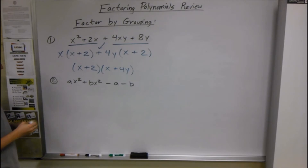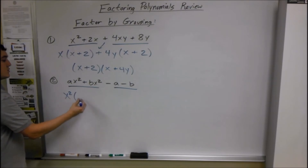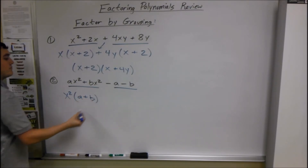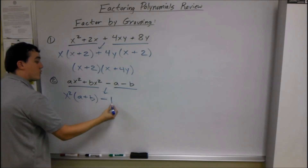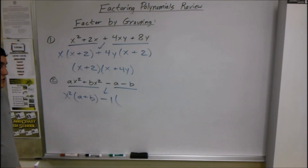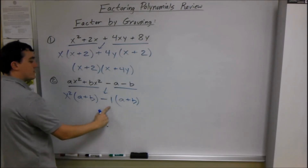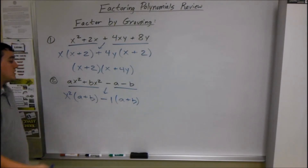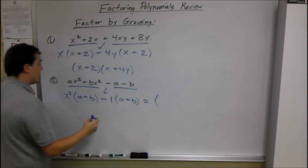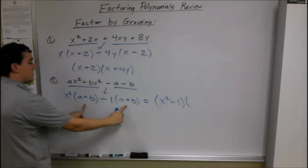We're going to do the same thing for the next example. Group the first two, group the last two. What do ax² and bx² have in common? They both have an x², so we take out x², leaving (a + b). Then the sign drops — minus. What do these last two have in common? Not much, but we can take out a 1 — you have to take something out when factoring by grouping. If we take out negative 1 from both, we have (a + b) left because we divided both by negative 1.